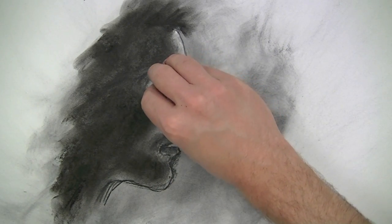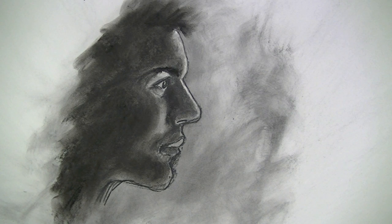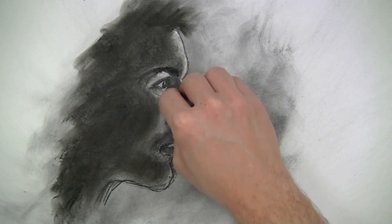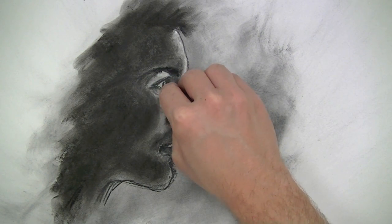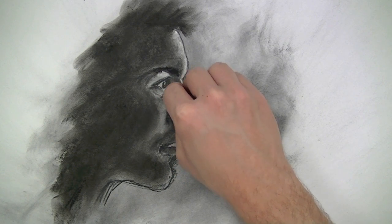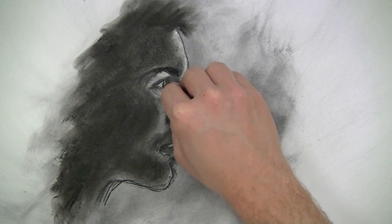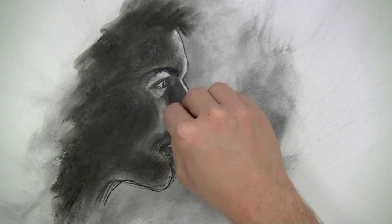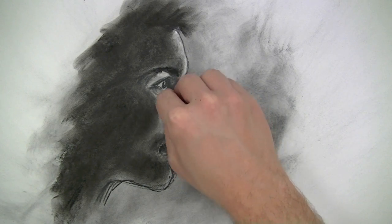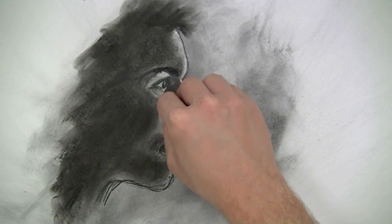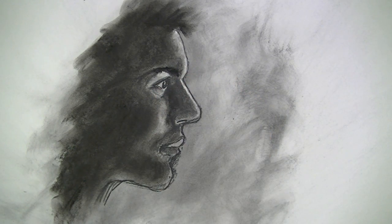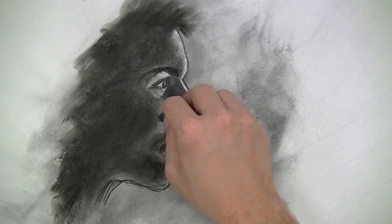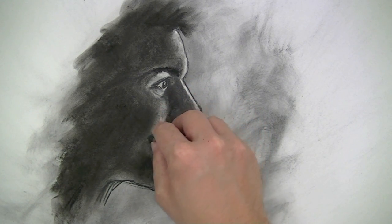The great thing about a kneaded eraser is that you can move it and manipulate it into different shapes and forms as you need it. You can bring it to a sharp point if you need a sharp point to erase an area or you can erase a larger area by making it kind of flat. You can also just touch it to the surface and lift up some of the material on the surface making the whole area lighter in value if you like as well.